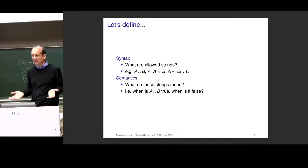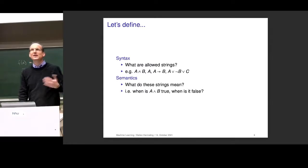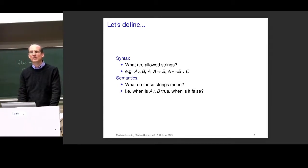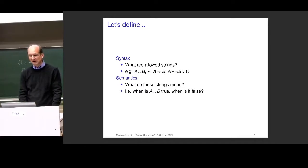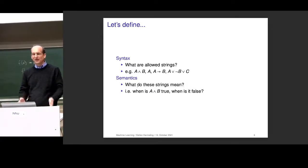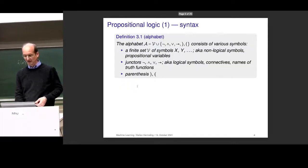As computer scientists, when you write a compiler, you need to specify the language — you specify the syntax without giving it meaning, and then you implement a parser that generates a parse tree from reading computer code. That's exactly the same as what we're doing here. Once you have the parse tree, typically you have an interpreter or evaluation function which assigns semantics to it. These things totally make sense.